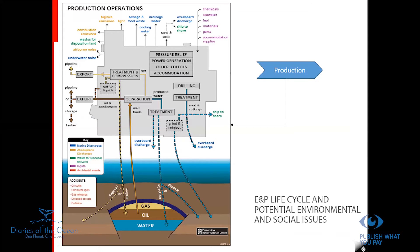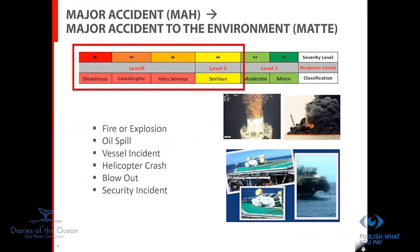Then we move into production — when we actually extract oil and gas from the reservoir, bring it up to the rig, and take it for processing and use. This phase is associated with multiple environmental impacts, from emissions to discharges to accidents. In addition to routine impacts, we also have what we call major accidents, which most of the time become major accidents to the environment. These include fire or explosion, oil spill, vessel incidents, helicopter crashes, blowouts, and security incidents.